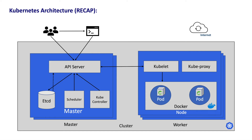Welcome back to the Kubernetes series. In the Kubernetes architecture chapter of this series, we have learned that a pod is restarted automatically if Kubernetes finds a pod in an unhealthy state. But how does Kubernetes know if a pod is healthy or not? In this section, we will learn how Kubernetes identifies whether a pod is working or not.